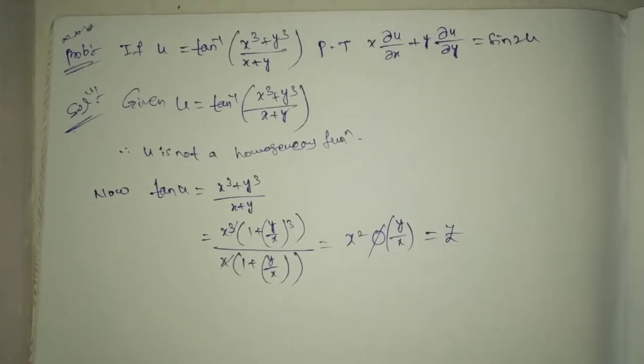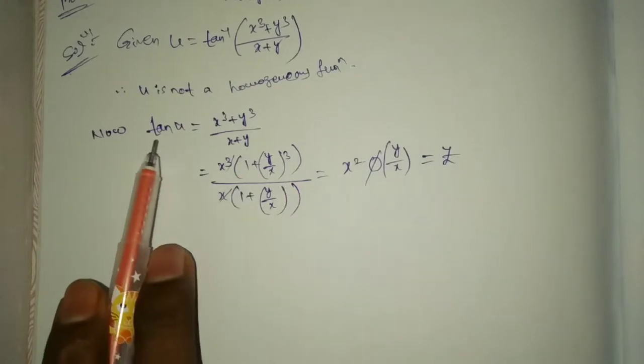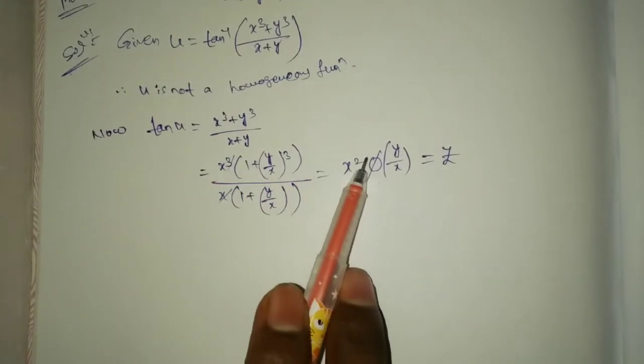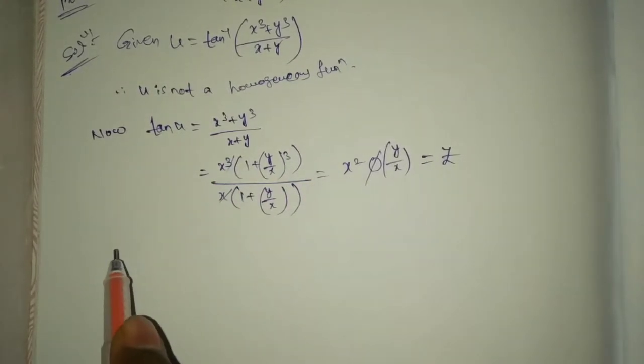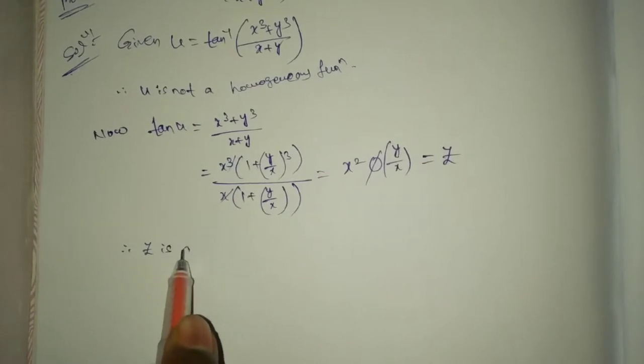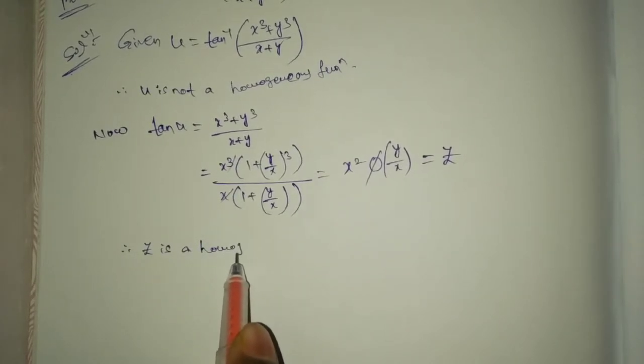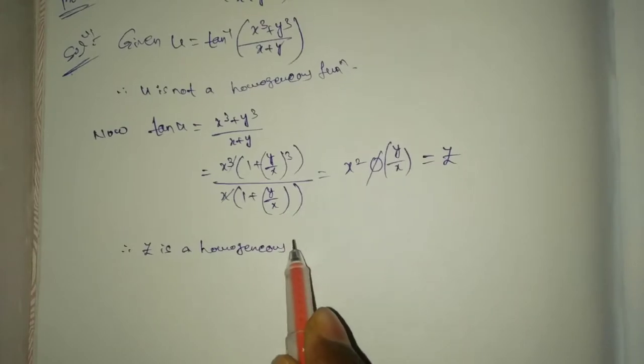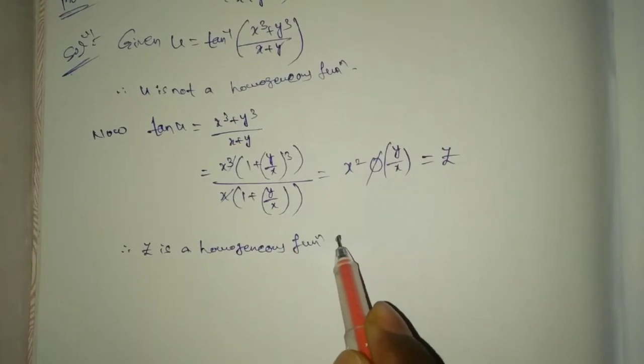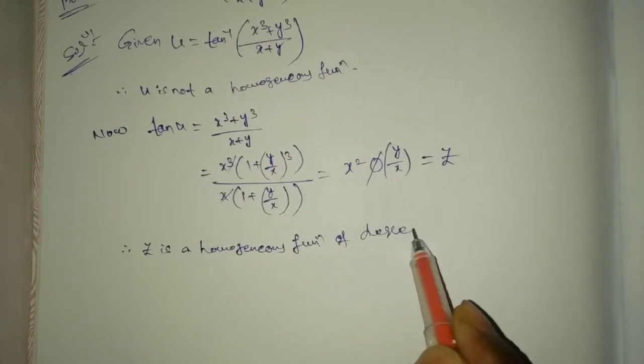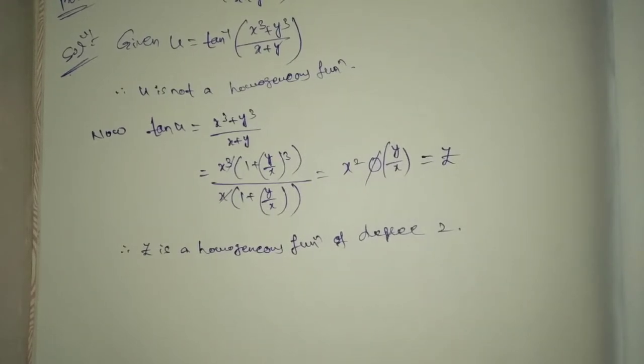That equals z. Now z equal tan u. What is the degree here? 2. Therefore z is a homogeneous function of degree 2.